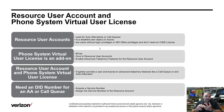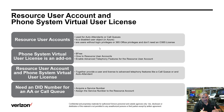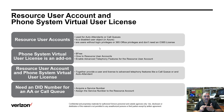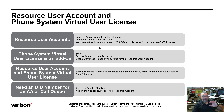Now let's look at the resource user account and the Phone System Virtual User license — I have to talk about one to explain the other. Everything inside Microsoft Teams and Skype for Business Online is essentially a user. Teams has advanced calling features like auto attendant and call queues, and both of those require a user object — the feature is attached to that user.